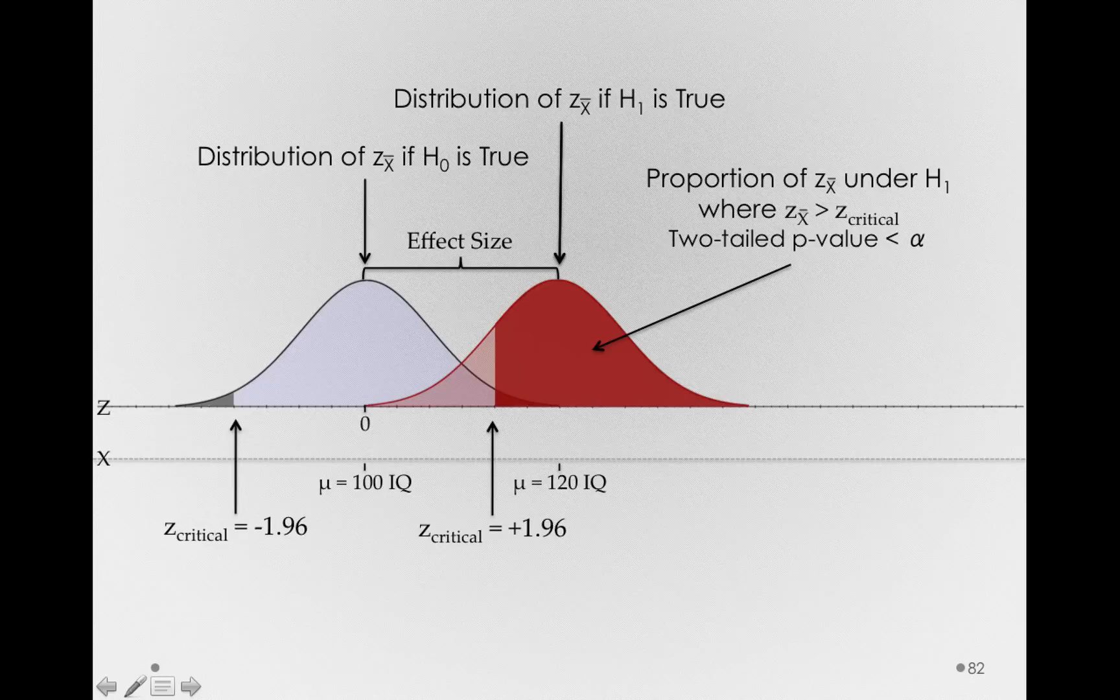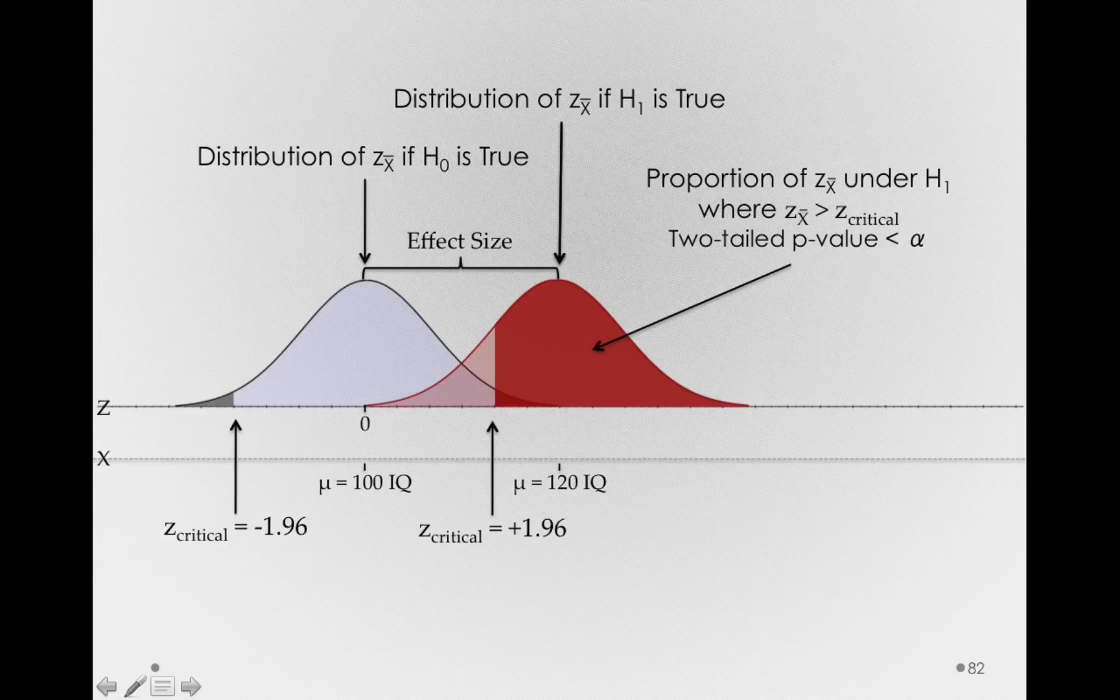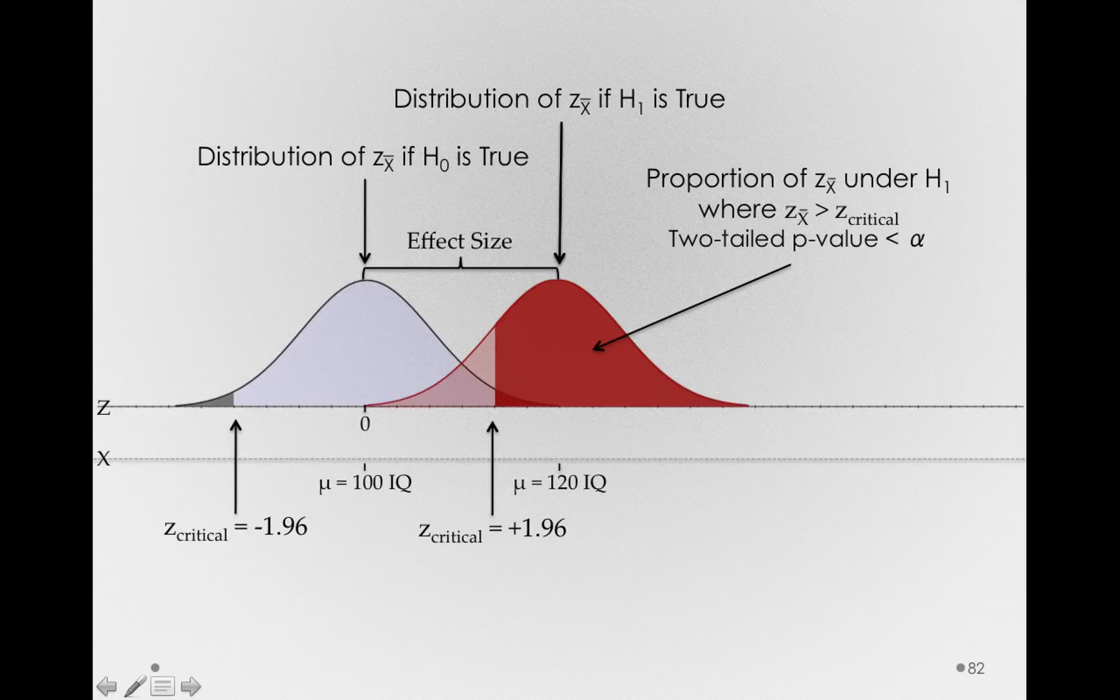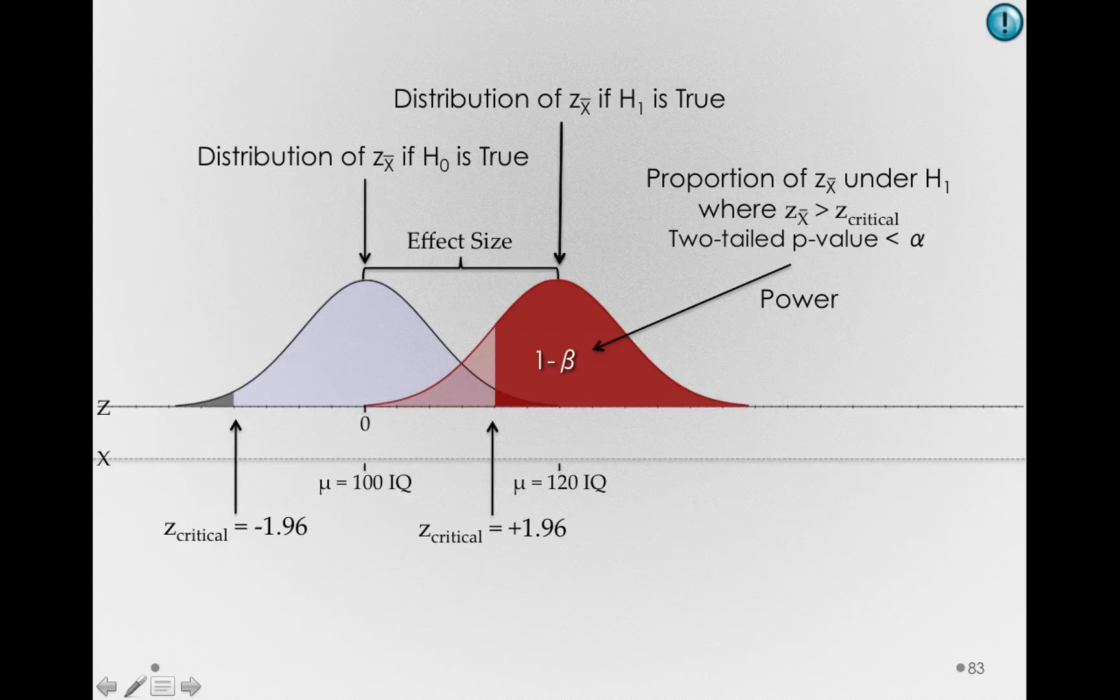Remember, if our sample is coming from the distribution under H₁, the distribution where the alternative is true, and we reject the null hypothesis, well, that's a correct decision. So this region I've just shaded for this particular situation is the power of this test statistic. That is, this is the region of 1 minus beta.